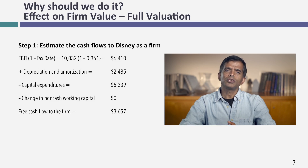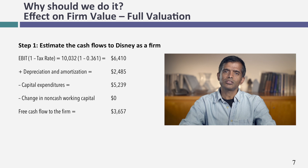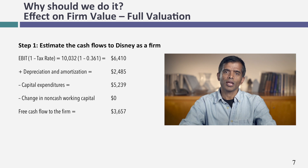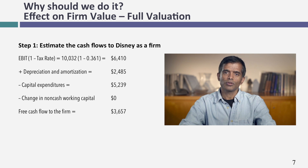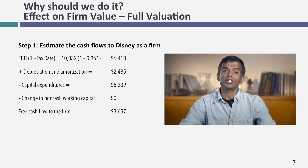Let's start with the first question: why should we do it? The most simplistic way of answering this is to go back to the valuation equation that motivated why we thought about the cost of capital when considering the optimal debt ratio. The value of a business is the present value of its expected cash flows, with the cost of capital as the discount rate. We know what the value of Disney is as a business.